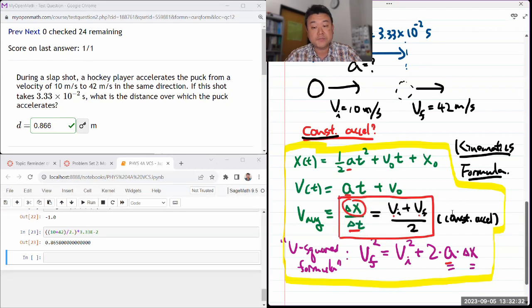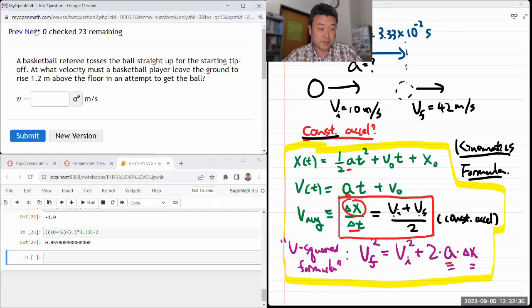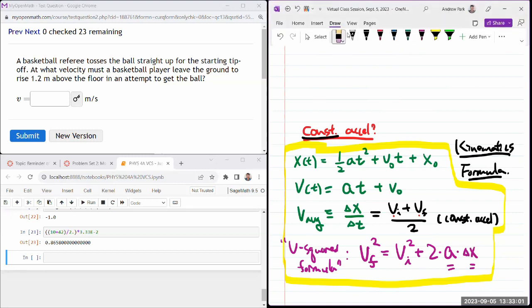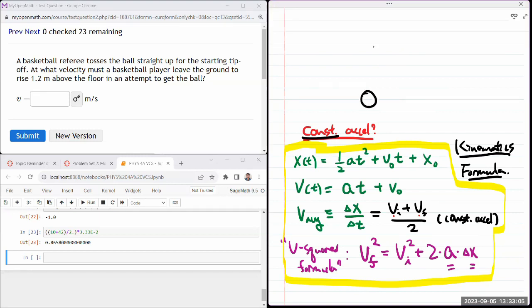Next question says a basketball referee tosses a ball straight up for the starting tip-off. At what velocity? Okay, so we are being asked for initial velocity. Must basketball player...